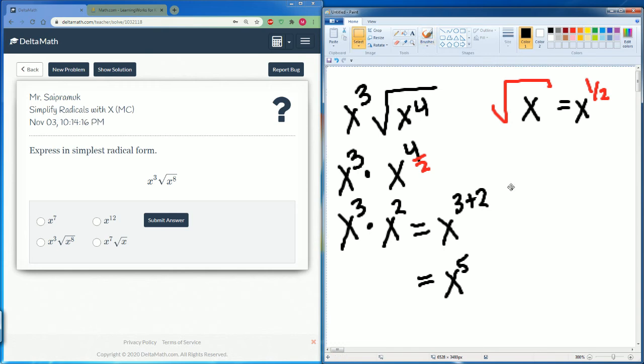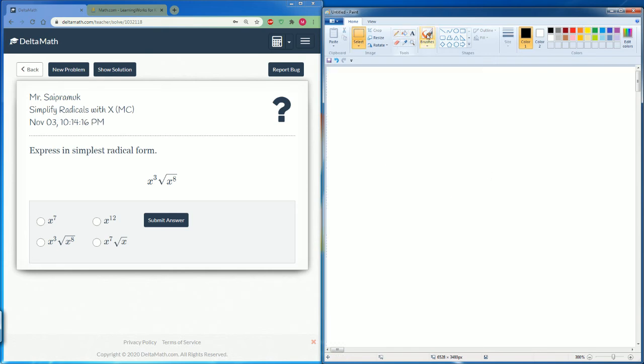Same thing here. We have x cubed radical x to the 8.